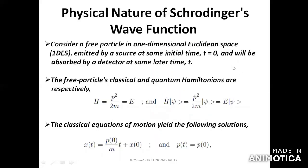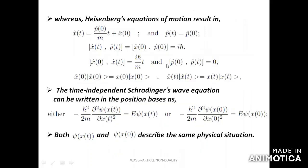For the physical nature of the Schrödinger equation, consider a one-dimensional case for a free particle. The classical Hamiltonian and the quantum mechanical Hamiltonian are given. If you solve the classical equations of motion, you get x(t) and p(t). In the quantum mechanical case, the Heisenberg equations of motion give operator-based relations, and from here you can see the commutation relation x(t), p(t), x(0), p(0) = iℏ. Using this commutation relation, the Schrödinger equation can be expressed in the position-based representation.